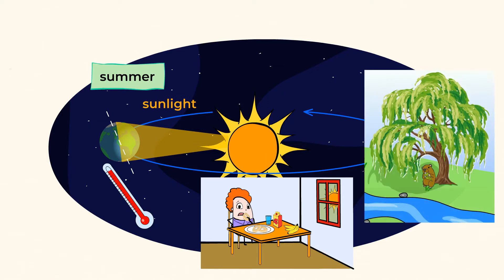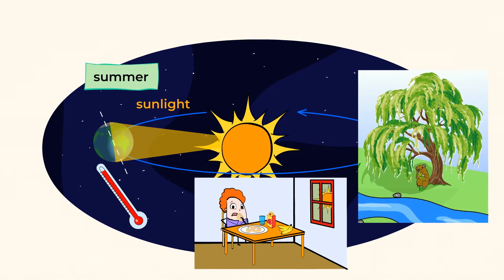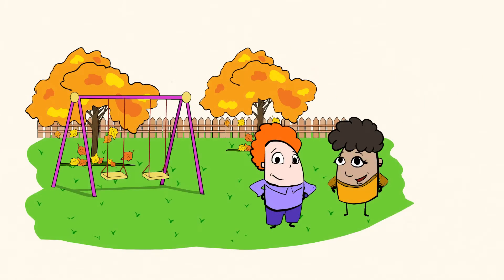Animals try to stay cool by finding shady spots or even going underground to beat the heat. But as the Earth continues its orbit, or movement around the sun, the seasons change. Let's see what season is next.